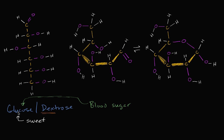Along with another simple sugar, fructose, glucose can be used to form table sugar. But even glucose by itself is sweet. So let's get familiar with it as a molecule. When you look at glucose drawn as an open chain, we can start counting its atoms.